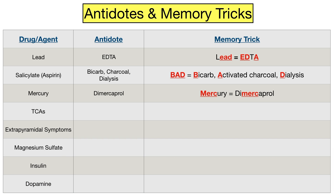Moving on to TCAs, which are a class of antidepressants called tricyclic antidepressants. The treatment for TCA overdose is sodium bicarbonate. This can be remembered because the letters T-C-A appear in the word bicarbonate. TCA overdose can cause EKG changes such as widened QRS complexes due to sodium channel blockade — this is one of the reasons why sodium bicarbonate is indicated.